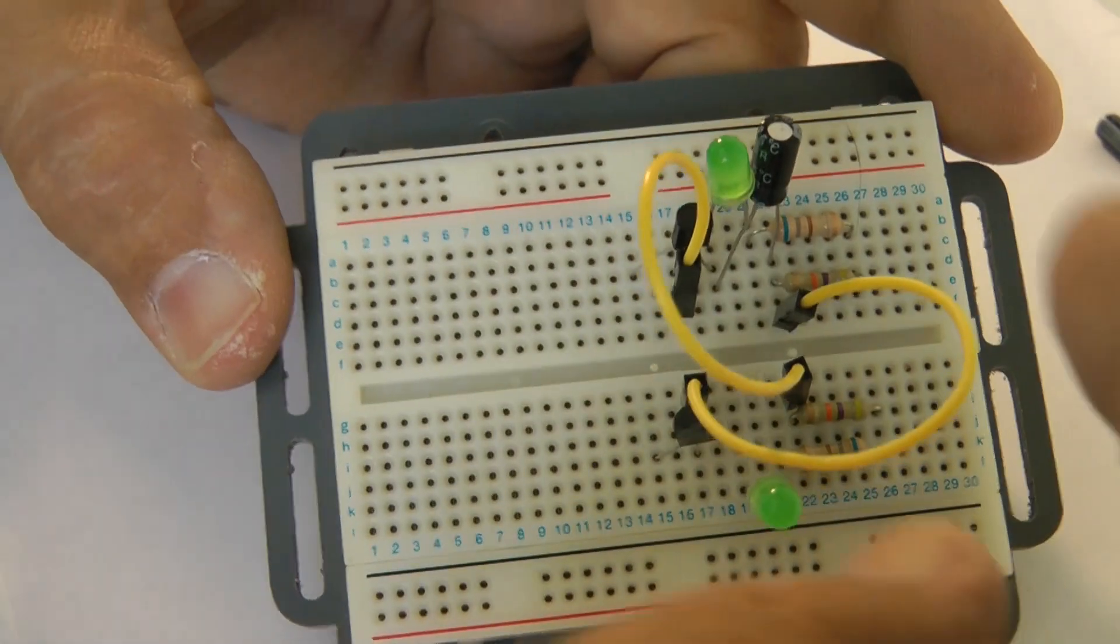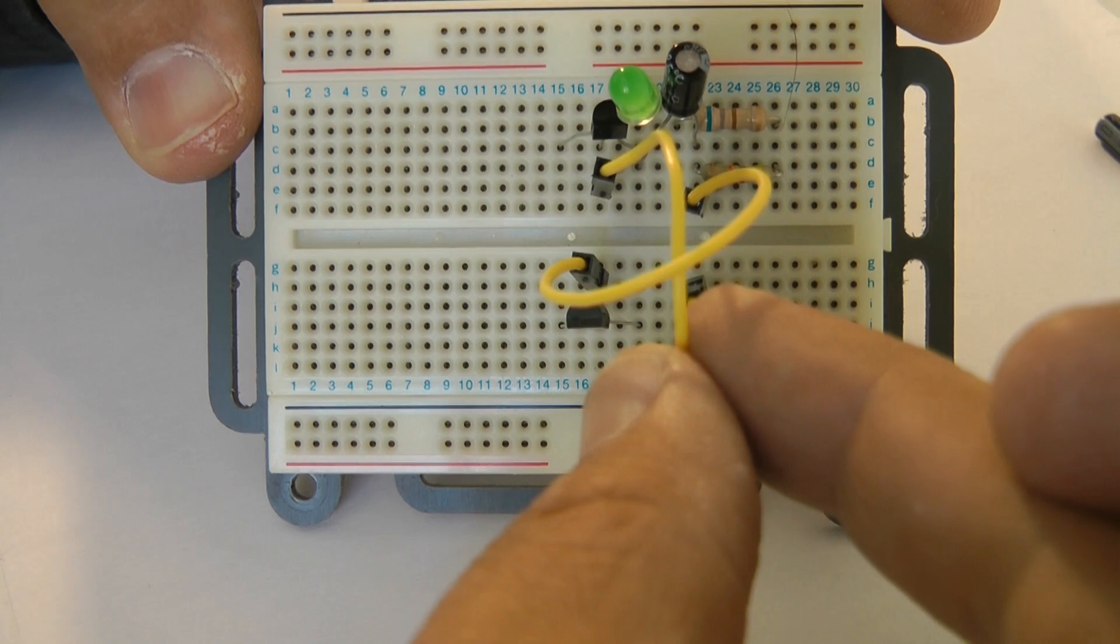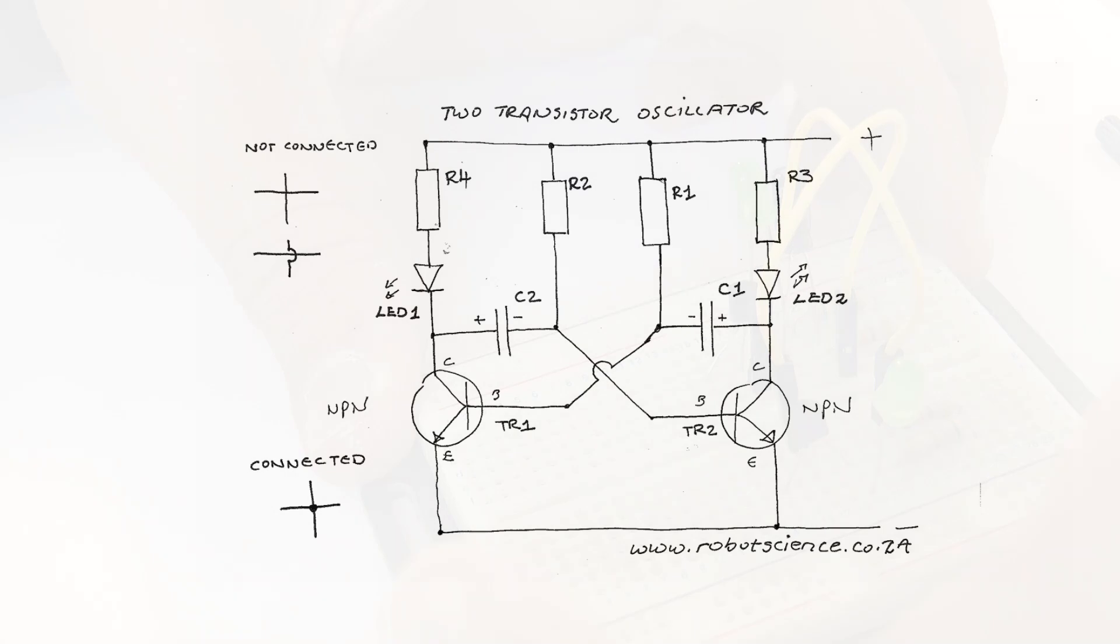And we've got the same effect where we've got these two wires that cross over. Can you see how they cross over? Just like in the schematic diagram.